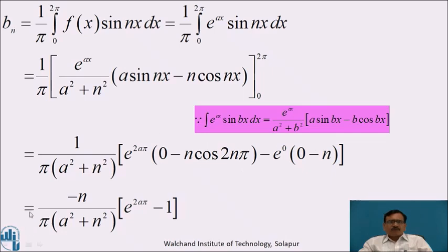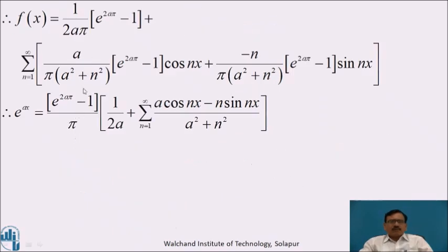Simplifying bₙ = −n(e^(2aπ) − 1) / [π(a²+n²)]. Substituting a₀, aₙ, and bₙ into equation 1, the Fourier series is: e^(ax) = (e^(2aπ) − 1)/π · { 1/2 + summation from n=1 to infinity of [a cos nx − n sin nx] / (a²+n²) }.